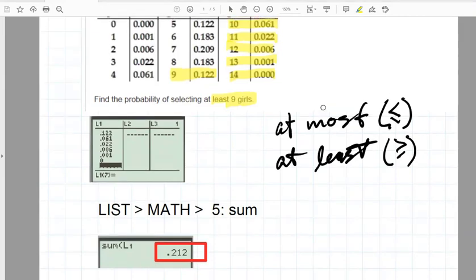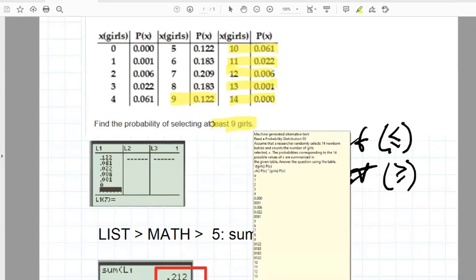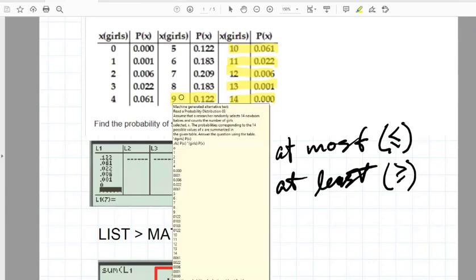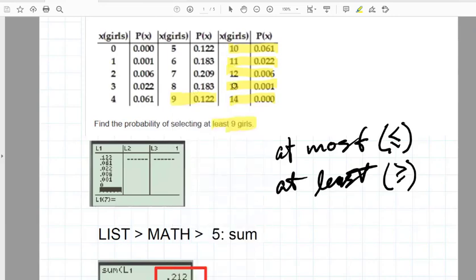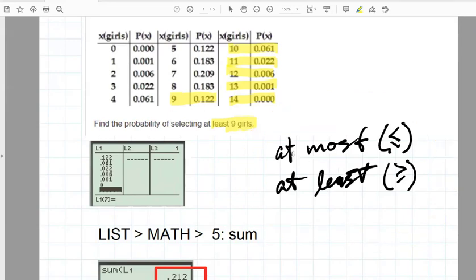And at least means, and here we're looking at at least nine girls, means nine or more, nine or 10 or 11 or 12 or 13. And again, I don't expect you to memorize anything in this course. But this is important to know the difference between at least and at most. So that you might make a note of this somewhere in your notes.